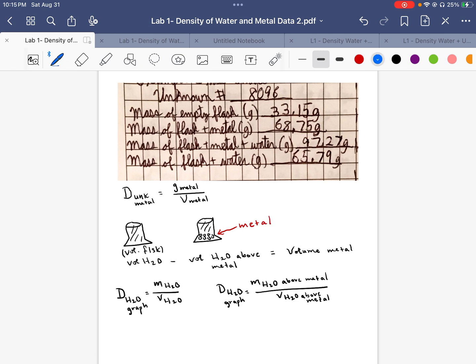And above that metal is the water that you put in there. And then over here I have the water filling up the whole flask. And so we're going to use this information that you used from lab in order to figure out the density of the unknown metal.